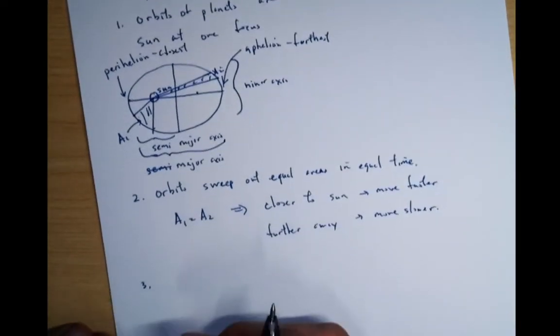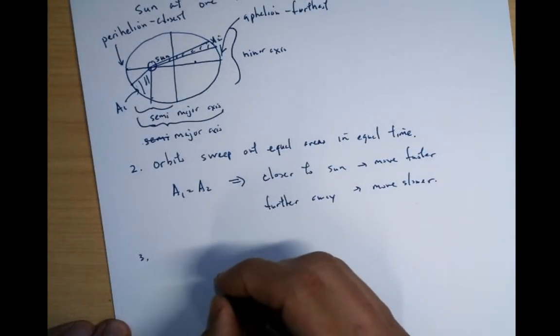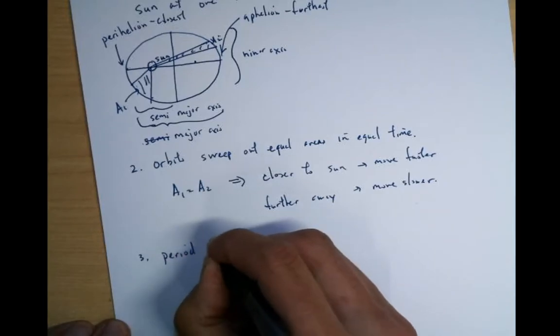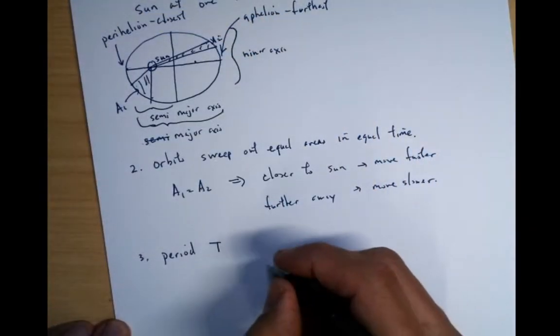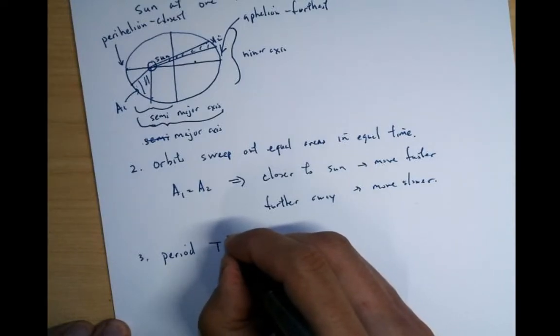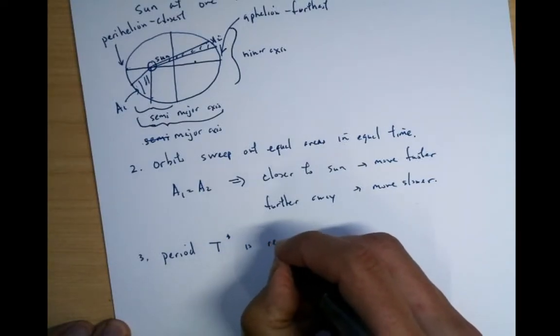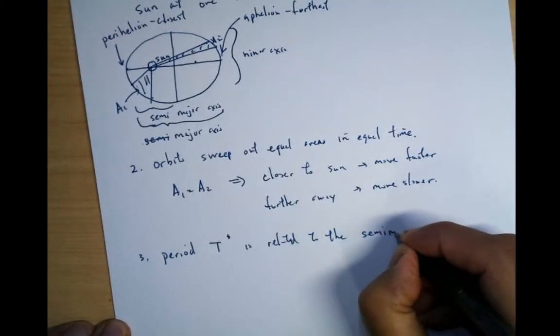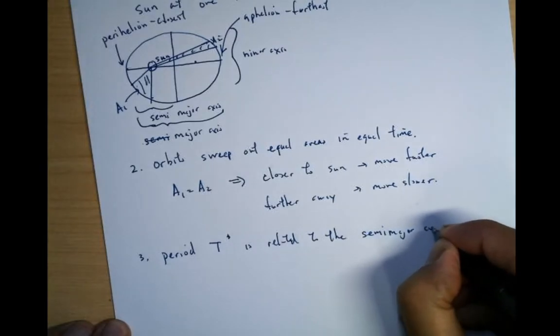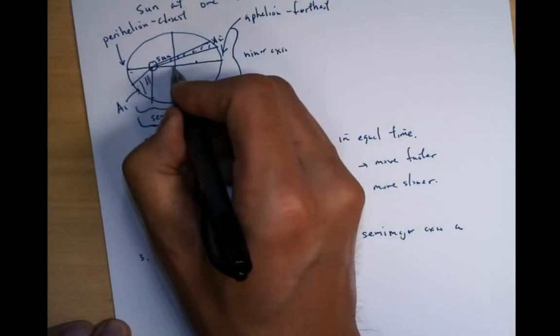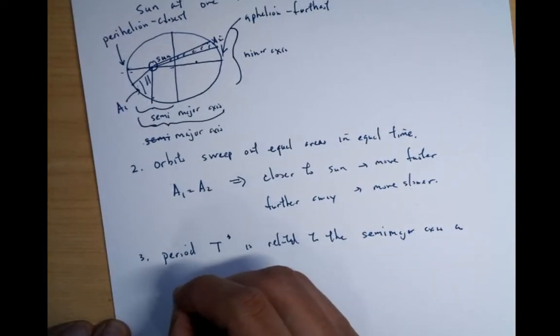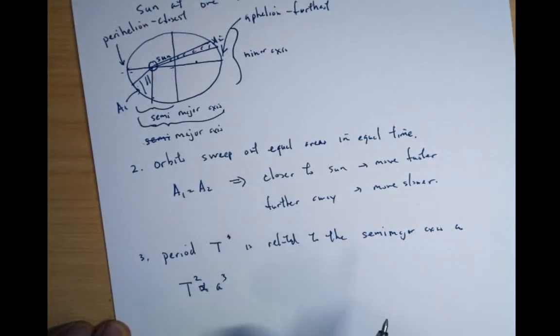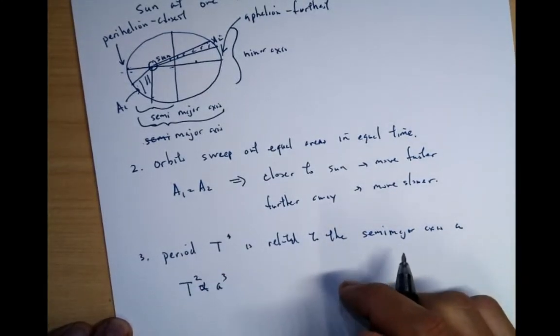And then the third thing that he found was that basically the period T, the time it takes to go around this ellipse once, is related to the semi-major axis A. So in fact, the answer was that T squared equals A cubed or proportional to A cubed. It's actually the more correct way of saying that.